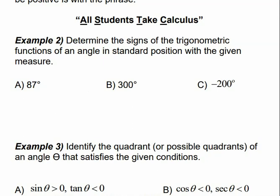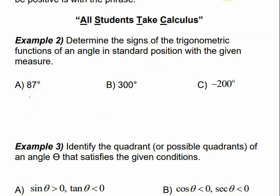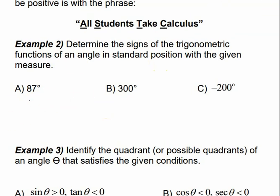Now we're going to determine the signs of the trigonometric functions of an angle in standard position given the measure. For 87 degrees — we know 90 degrees would be the boundary — 87 is just a little less than 90, so that puts us in quadrant one. All of the trig functions are positive in quadrant one, so sine, cosine, tangent, and their reciprocals are all positive.